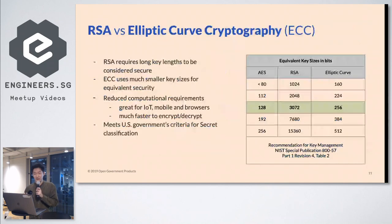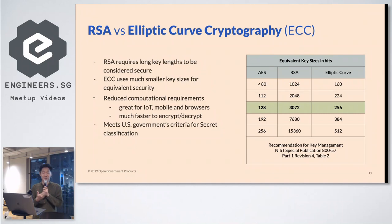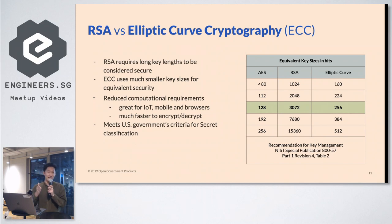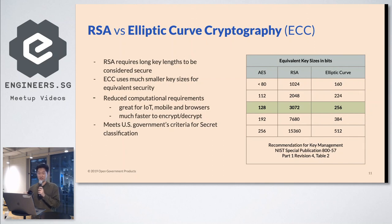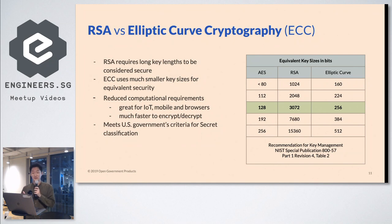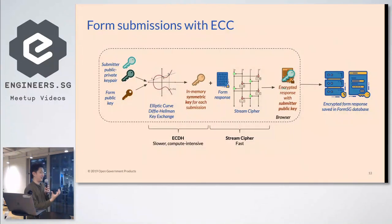We did some research and realized that RSA was from the 70s. There's a new class of algorithms called elliptic curve cryptography. For the same amount of security, you can have much smaller key sizes, which translates into fewer CPU cycles, greatly reducing computational requirements — making it great for IoT, mobile, and browsers. Looking at the National Institute of Science and Technology standards for the United States, it actually meets the US government's criteria for secret classification. When we saw this, we immediately jumped on it and built it into our product.